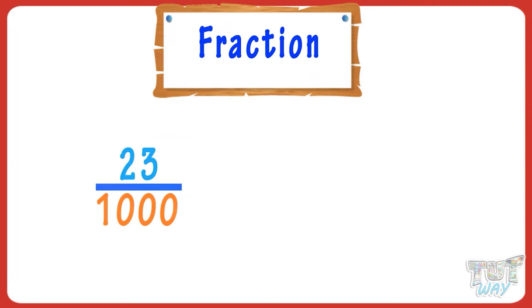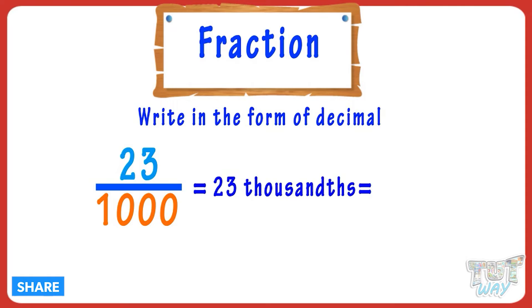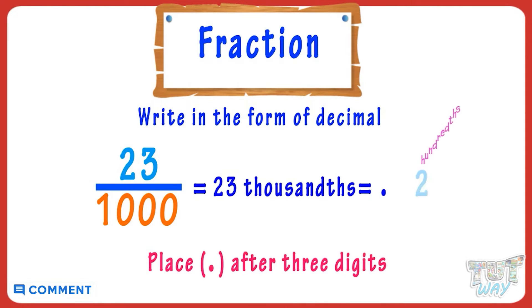Here we have a fraction. We have to write it in the form of a decimal. It is 23 thousandths, so we have to place the decimal after three digits from the left. But there are only two digits, so we don't have a third digit.